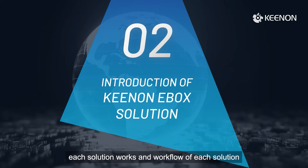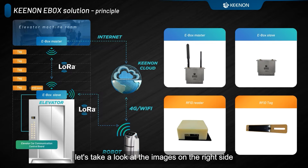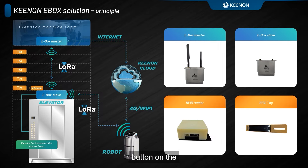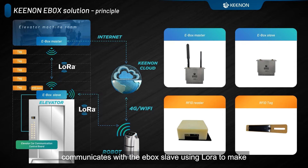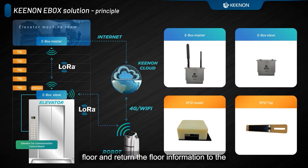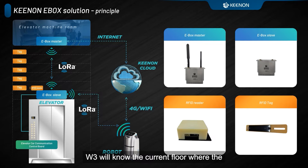I will now illustrate exactly how each solution works. Let's move on to the first: the Kenan EBOX Solution. These modules shown here are all part of the EBOX Solution used for elevator control, provided by Kenan. EBOX has two main parts: the slave and master modules. We need to install the slave module at the top of the elevator car. The slave module will be connected to each floor button on the elevator panel via I/O cables, with the purpose of controlling the elevator button on each floor. W3 communicates with the EBOX slave using LoRa to make elevator calls and operate destination floor buttons. An RFID sensor also needs to be installed next to the slave module — this sensor identifies the current floor of the elevator by detecting tags placed on each floor and returns the floor information to the EBOX slave, which then relays data to the robot via LoRa. In this way, W3 will know the current floor where the elevator is located.